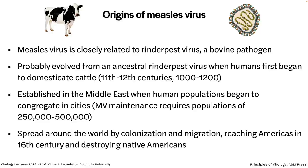Measles virus is another interesting story — it seems to have come from rinderpest virus, a virus causing disease in cows. When we realized cows were useful, we started capturing them and growing them in fenced areas. As we got more cows and were close to them — taking milk and so forth — we got their viruses. We think rinderpest began to infect humans when we domesticated cattle, and as populations grew in the Middle East, the virus became established. You need between a quarter million and half a million people in one area to sustain measles virus transmission.